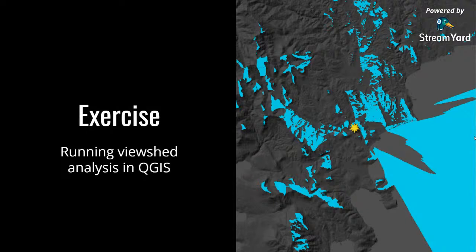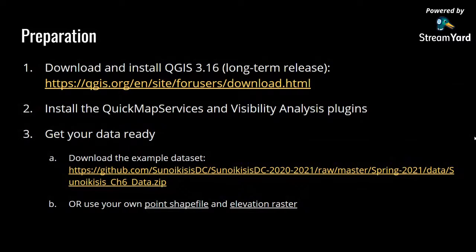Now I'll do a live demo running a viewshed analysis in QGIS. To prepare, links are on the GitHub page. The first step is to download and install QGIS — 3.16 is the new long-term stable release, though 3.10 or even earlier is fine. I'll go over how to install two plugins: Quick Map Services and Visibility Analysis. You can also download the dataset with the points for this exercise, or supply your own point shapefile and elevation raster.